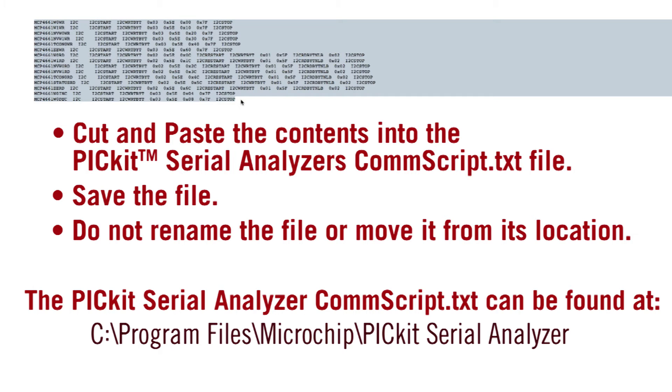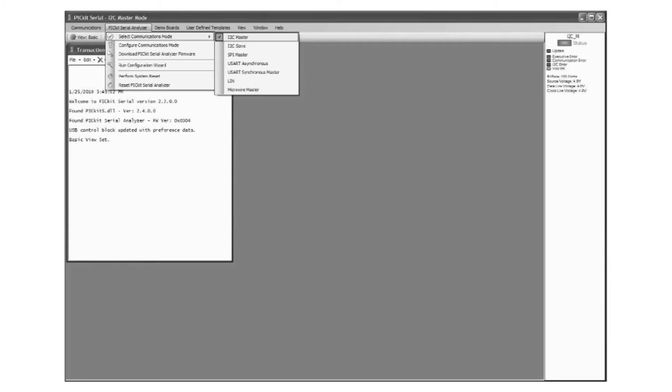The PicKit serial commscript.txt can be found on your PC at this location. Now we need to configure the PicKit to communicate with the MCP46XX EV evaluation board. In the upper right you will need to click on the PicKit serial analyzer tab.